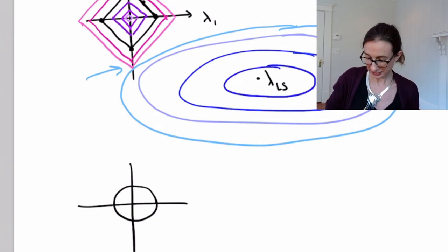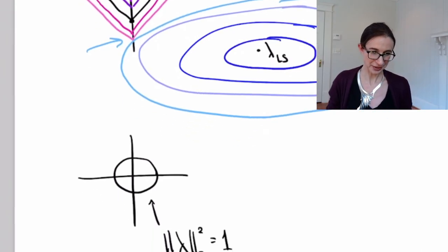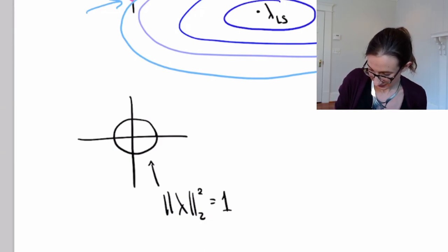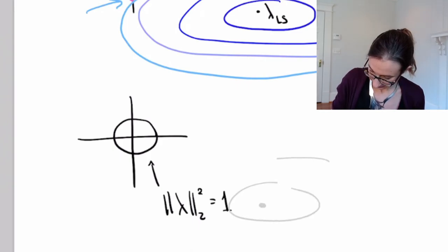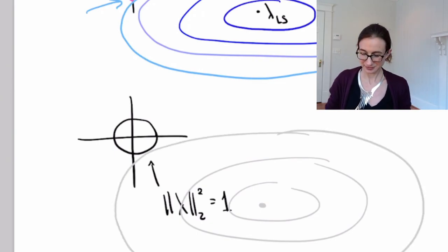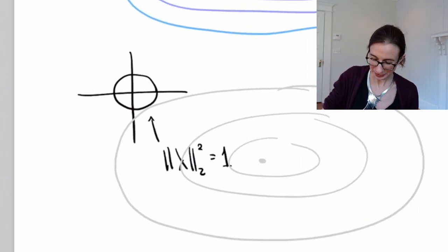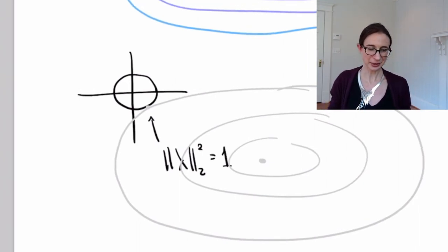So there's my level set for L2 regularization. It's a ball. And then when we bump into it, it's not going to be nearly the same thing. It'll be something like that. So we won't hit it. The axes are nothing special with L2 regularization. So you don't get a sparse solution.